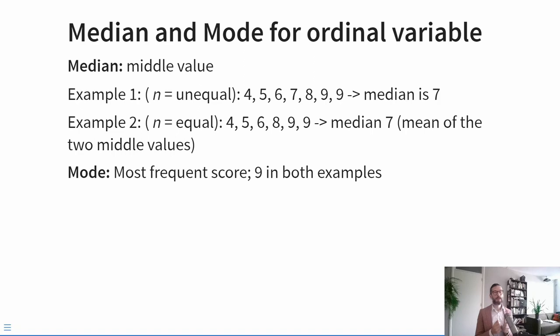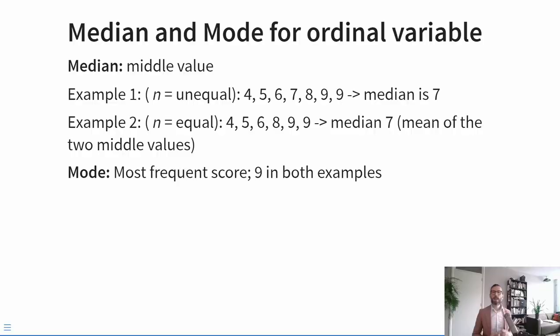We can also look at the mode in both of these examples. The mode is the most frequently occurring score, and in both examples that is 9. The final measure of central tendency is the mean — what you probably think of when I say 'the average value.' To get the mean, you just add up all of the values and divide by the number of values, and you can only do this with continuous variables — that is, interval or ratio measurement level.